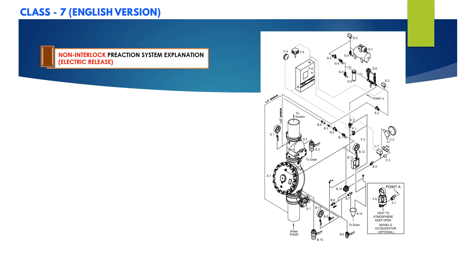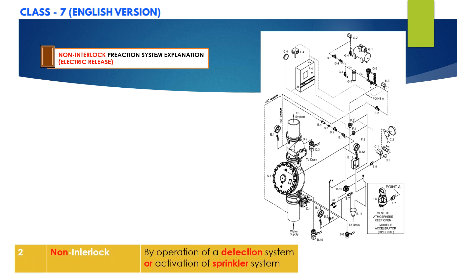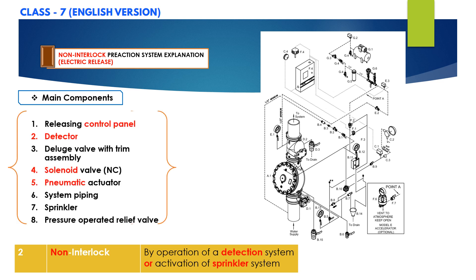Now let us go through the non-interlock system with electric release type. Before we move ahead with the system operation, let us identify the system components. The major components visible on screen are: releasing control panel, detector, deluge valve with complete trim assembly, solenoid valve, pneumatic actuator, and system piping connected to the sprinklers.